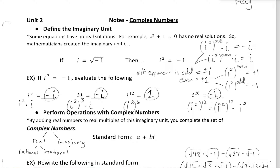If we increase our exponents, let's see if that pattern continues. To describe i to the seventh, that would be the same as i squared times i squared times i squared, or i squared to the third power times one more i — adding up to seven i's. So we have i squared, which is negative one, three times: negative one times negative one times negative one gives us negative one. So negative one times i gives us negative i again.